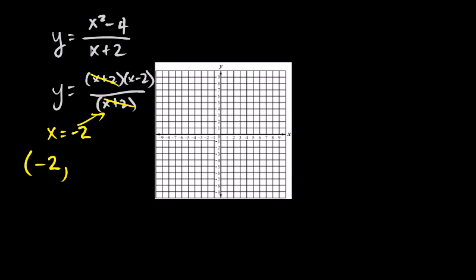And to find the y value of your hole, you want to look at the reduced function. So the reduced function, I'm going to write it up here, is y equals x minus two. This is the reduced function. And take negative two and plug it in. And so negative two minus two is negative four.